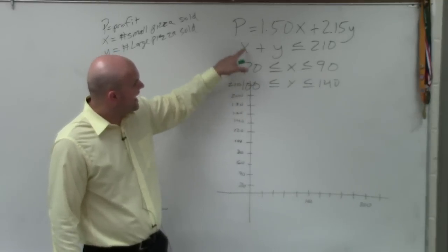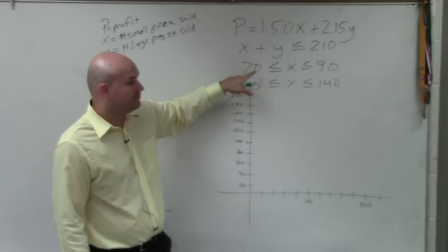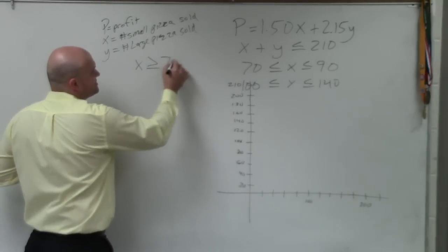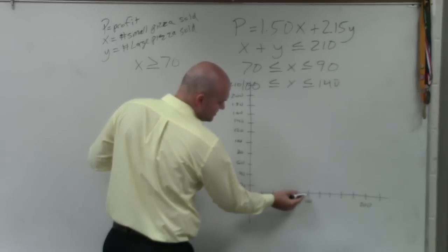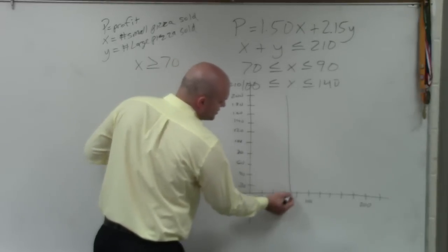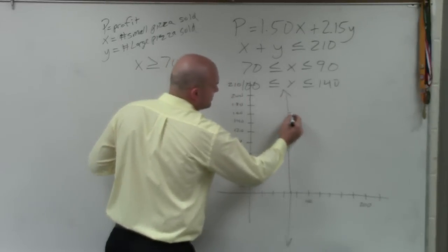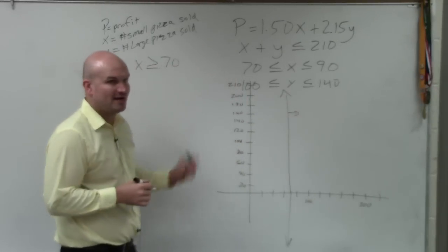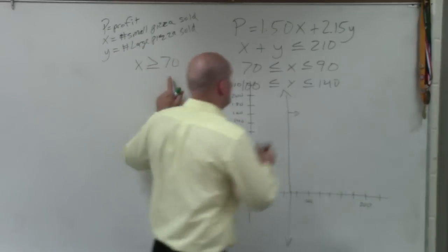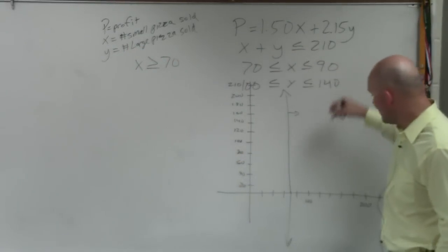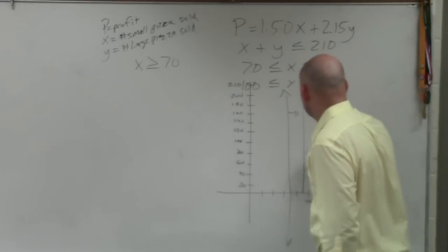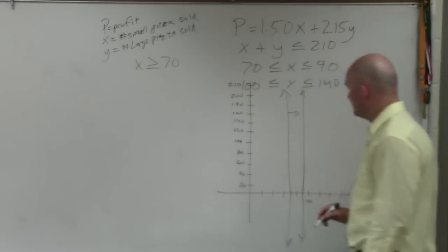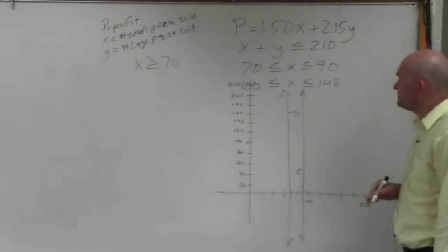We know that x has to be greater or equal to 70. So, I go to 70. This would be 80. This would be 60. So, 70 is right here. And I draw a straight line. And all values to the right of that are going to be greater than that. Then, we also know x has to be less than 90. So, I'd go to 90. And I draw another straight line. And x is less than 90. It's going to be all points to the left.